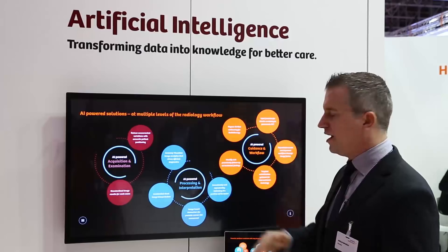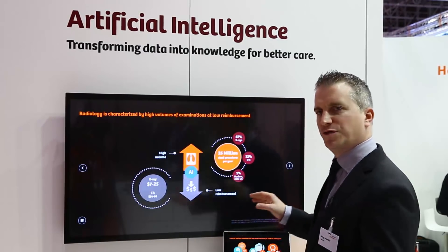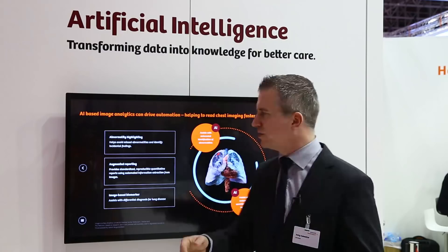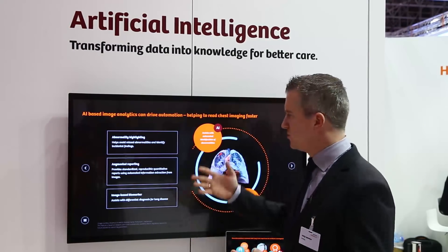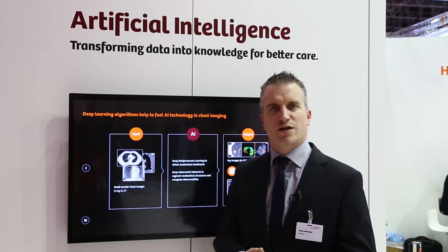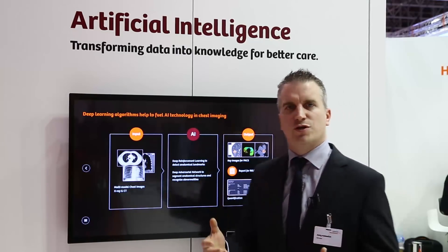An example of AI-powered processing and interpretation is multi-organ interpretation of the chest — a high-volume examination with diagnostic tests but low reimbursement. Looking at the chest, you have the lung, heart, airways, vascular system, and MSK, all of which need to be interpreted by AI algorithms. We apply deep learning algorithms to X-ray and CT images to drive key images to the reading front end of the radiologist.